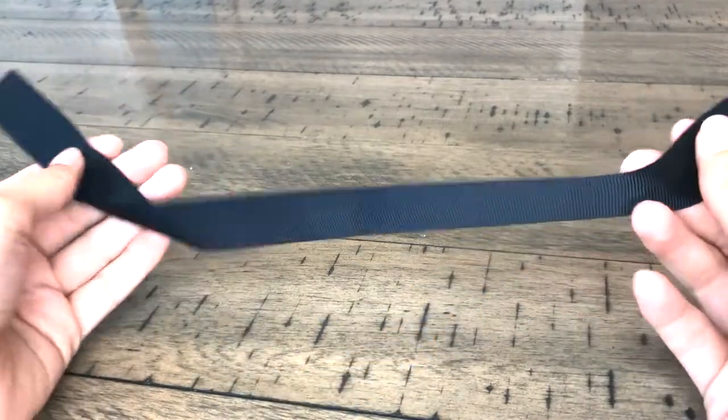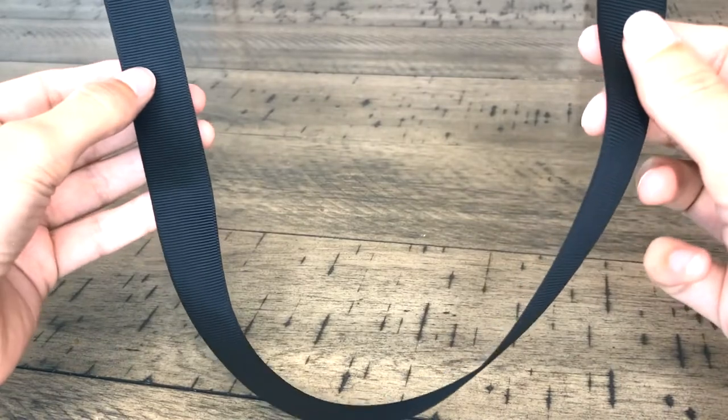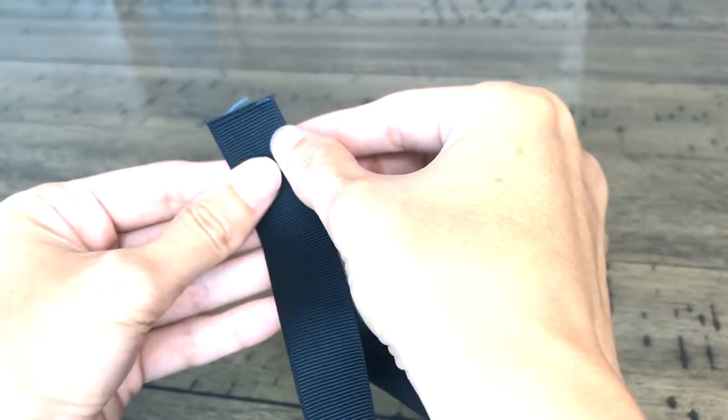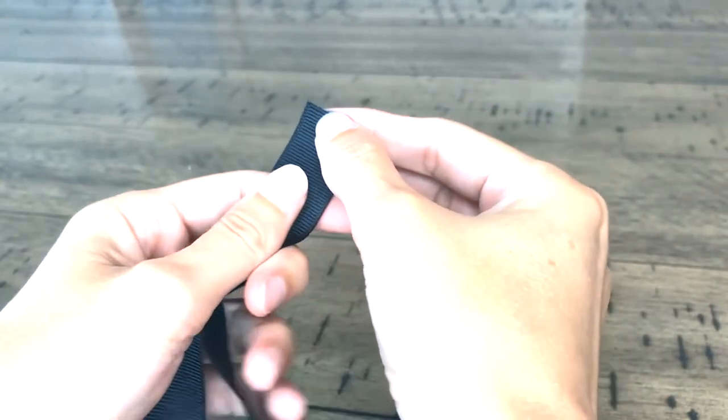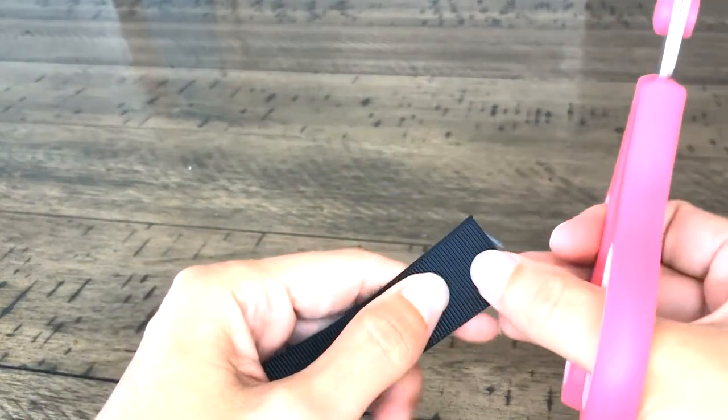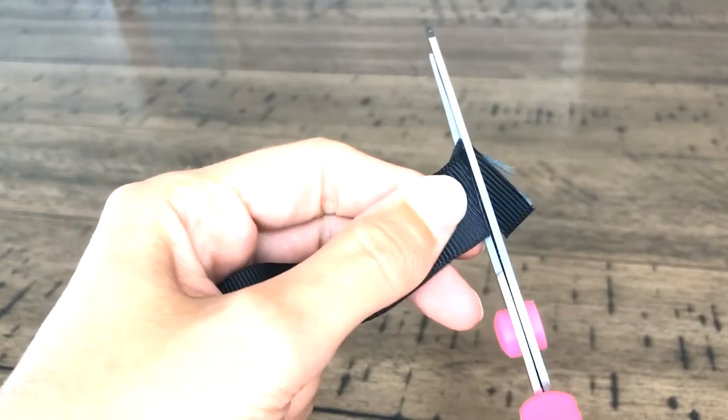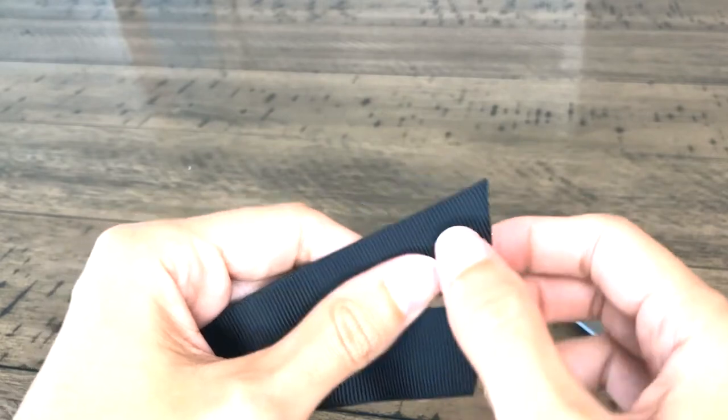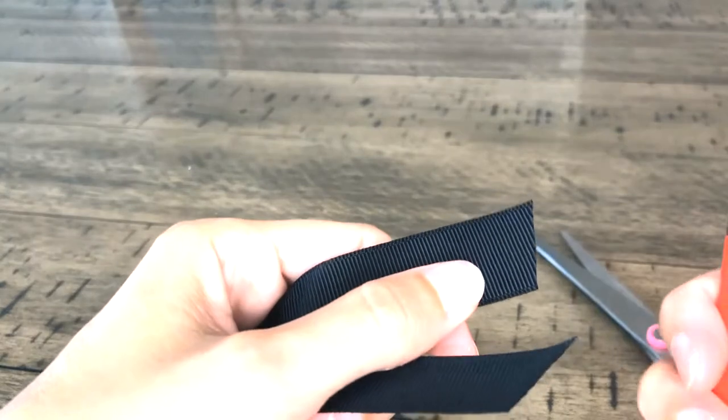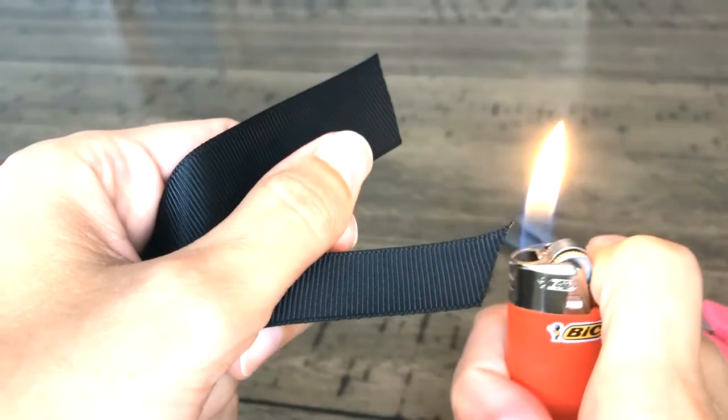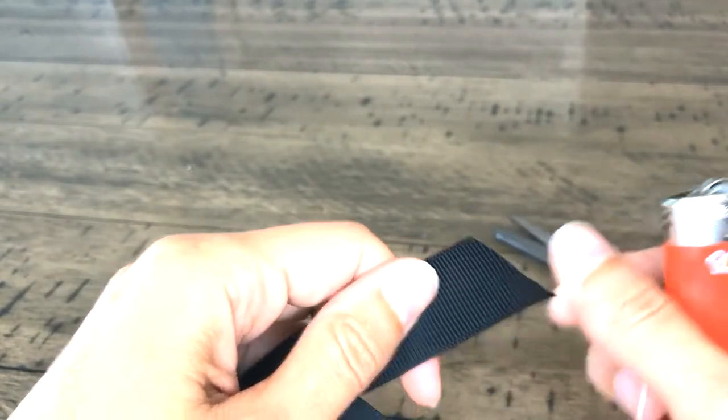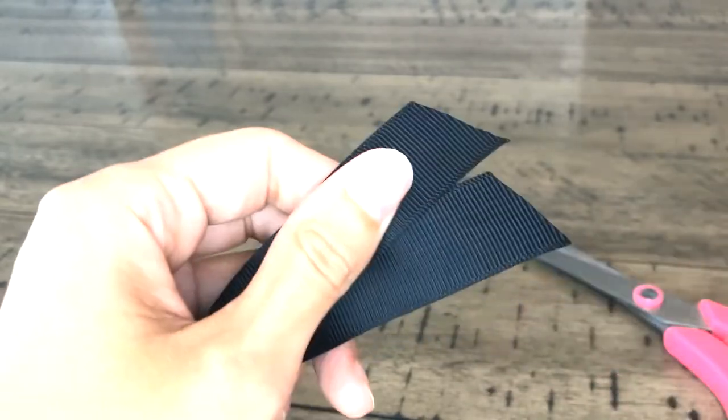So I'm going to start with my 15-inch piece of the seven-eighths. First thing I do is I put the two ends together and I take the one end and I flip it. And now I'm just going to cut on a diagonal. And I'm going to heat seal the ends, so I'm just going to take my lighter and kind of burn the ends. And that's so that the ribbon doesn't start to unravel. And I always do both sides.